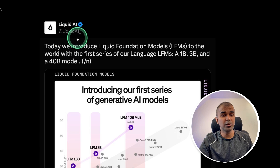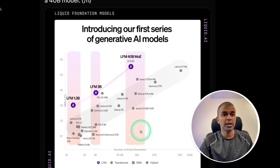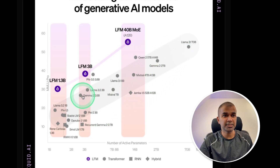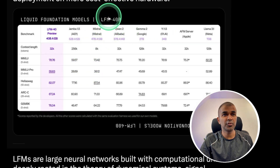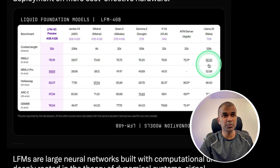Next, we have a model from Liquid AI, released in 1.3 billion, 3 billion, and 40 billion parameter sizes. Considering their active parameters, they are far better than all their competitors — and this is really impressive considering it's only their first series of generative AI models. The context length for the 40 billion mixture-of-experts model is 32,000 tokens. Compared to the LLaMA 3.1 70 billion parameter model, this is coming close to it — scoring 82 versus 78.